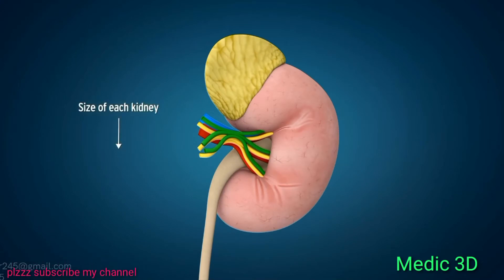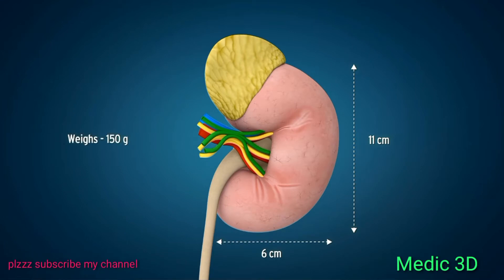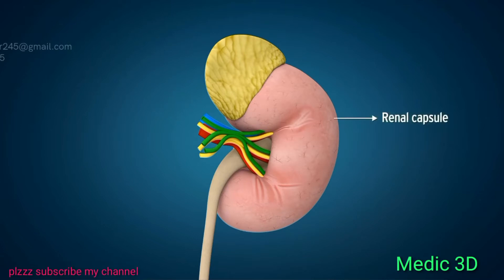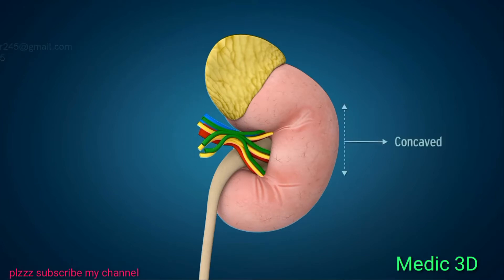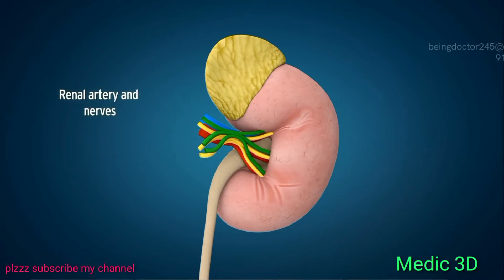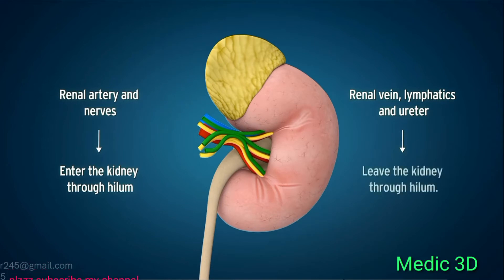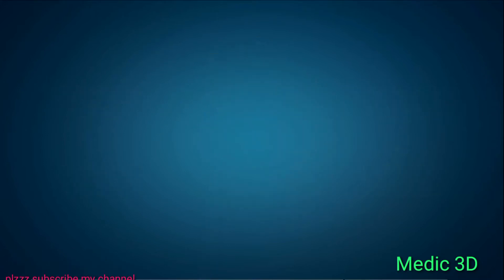In adults, the size of each kidney is about the size of one's fist — 11 centimeters in length and 6 centimeters in width — and weighs about 150 grams. A dense capsule called the renal capsule protects the kidneys. The medial border of the kidney is concave, and the center of this concavity is called the renal hilum. The renal artery and nerves enter the kidney through the hilum, whereas the renal vein, lymphatics, and ureter leave through the hilum.